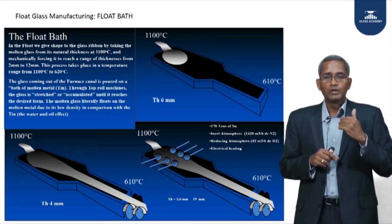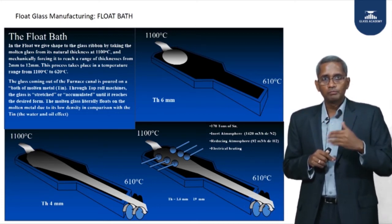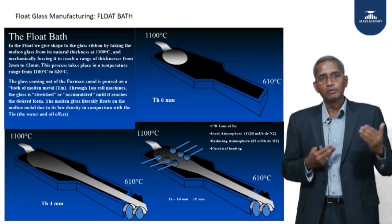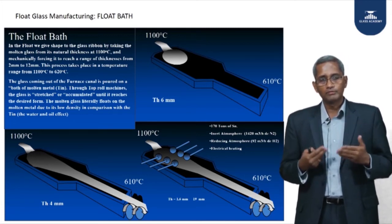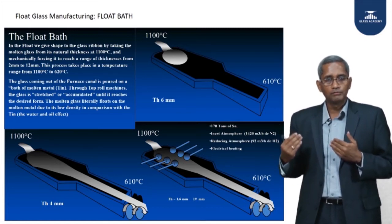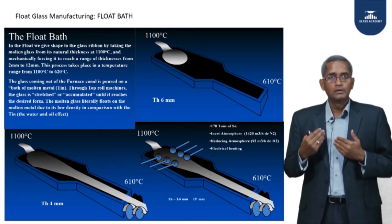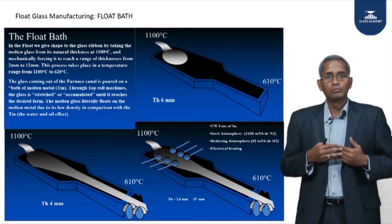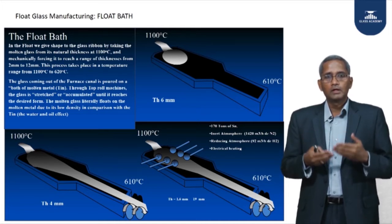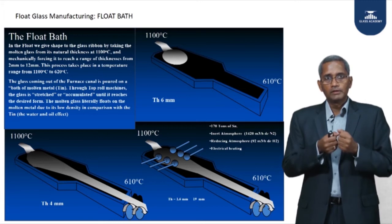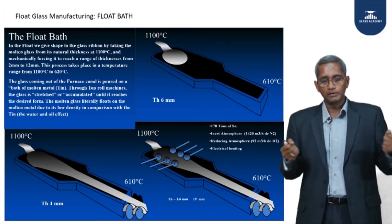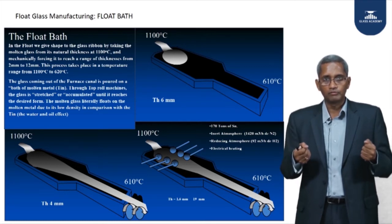If 5.7mm were the only thickness needed, we could just pour the glass and deliver it. But we need to produce thicknesses ranging from 1.4, 1.6, 1.8, 2, 2.5, 3, 4, 5, 6, 8, 10, 12, 15, and 19 millimeters on this float bath. So for thicknesses below 5.7mm the glass must be stretched and made thinner; for thicknesses above 5.7mm the glass must be compressed and made thicker.